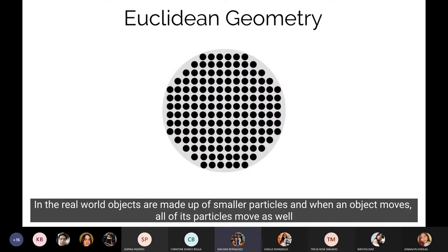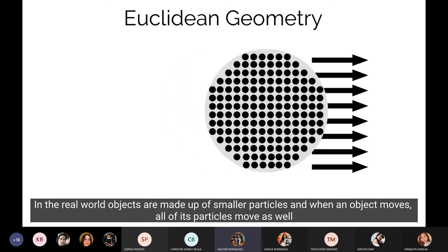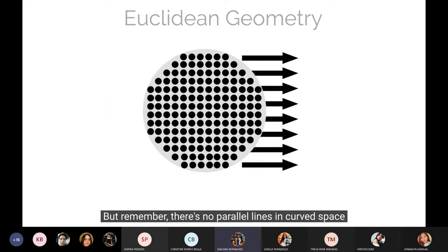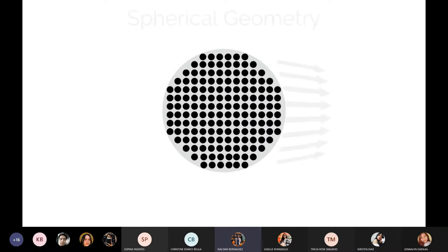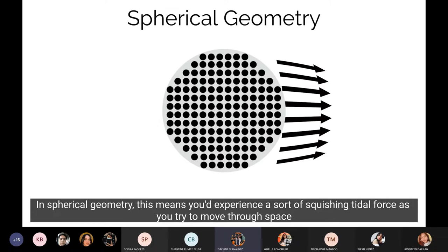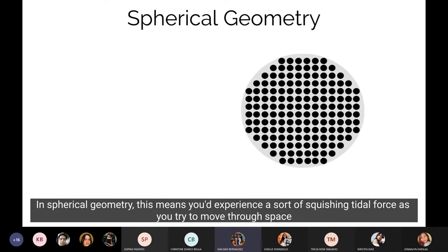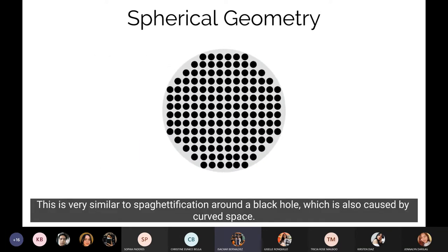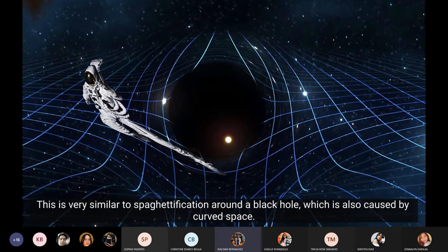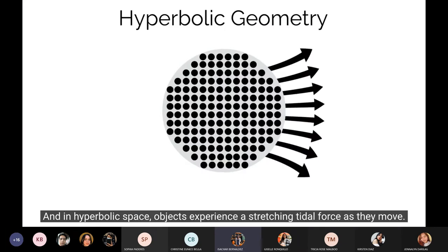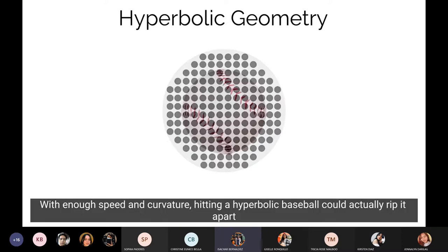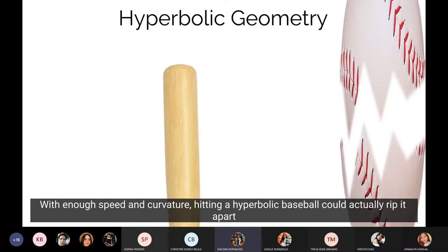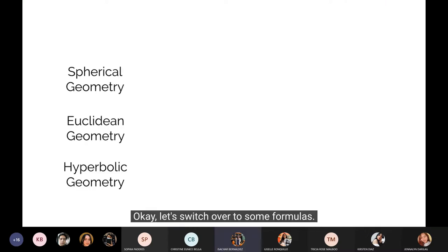In the real world, objects are made up of smaller particles, and when an object moves, all of its particles move as well. But remember, there's no parallel lines in curved space. So an object's particles can't actually all move in the same direction. In spherical geometry, this means you'd experience a sort of squishing tidal force as you try to move through space. This is very similar to spaghettification around a black hole, which is also caused by curved space. And in hyperbolic space, objects experience a stretching tidal force as they move. With enough speed and curvature, hitting a hyperbolic baseball could actually rip it apart. Okay, let's switch over to some formulas.